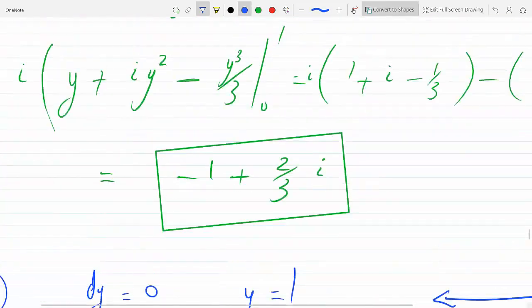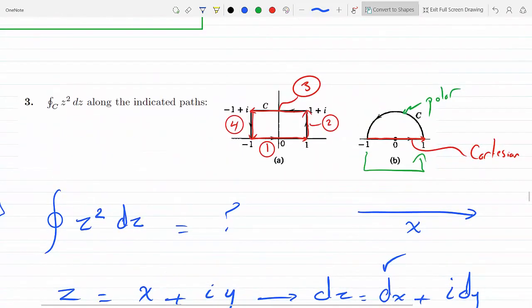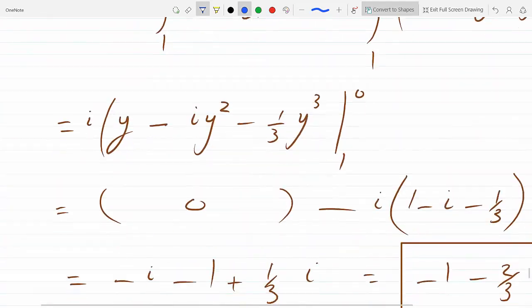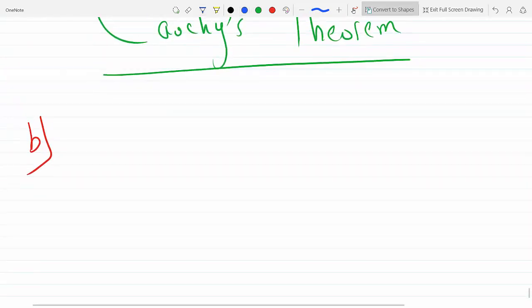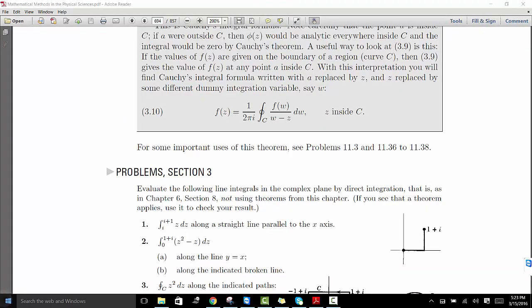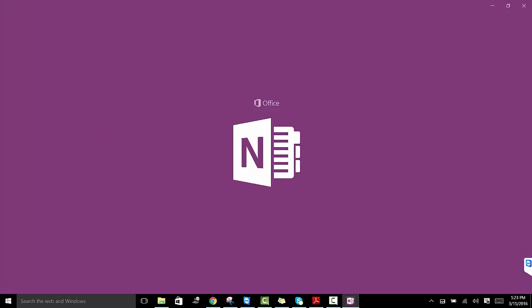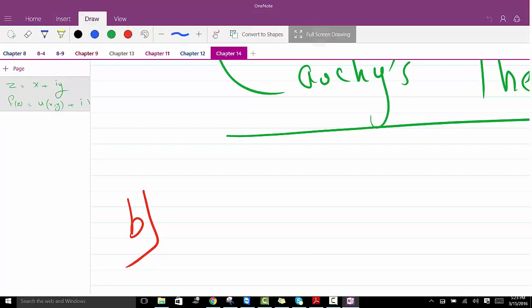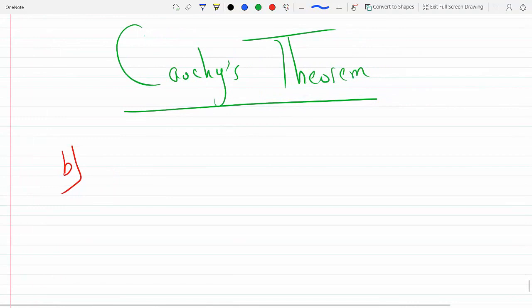We will split this up into one and two, so this is path 1 and this is path 2, and we'll add the two. So the closed integral of z squared dz will be the integral along path 1 plus the integral along path 2.